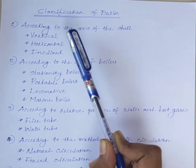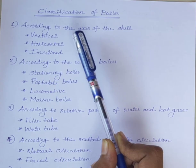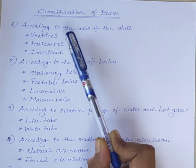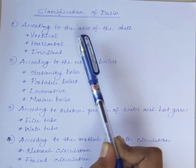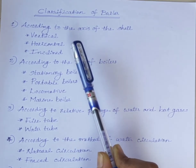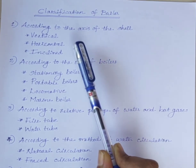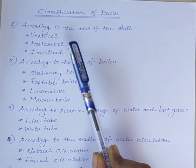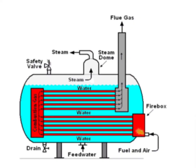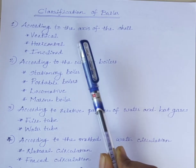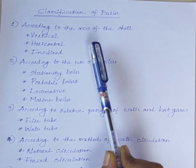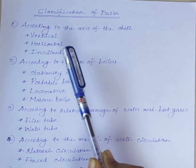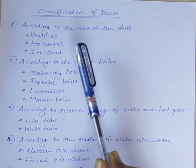If the axis of the boiler is vertical, then it is called a vertical boiler. If the axis of the boiler is horizontal, then it is called a horizontal boiler, and it consumes more floor space. In case of an inclined boiler, the axis is inclined.